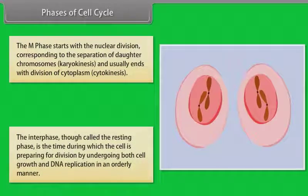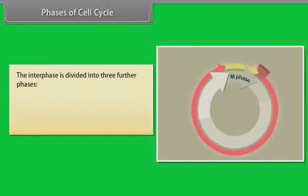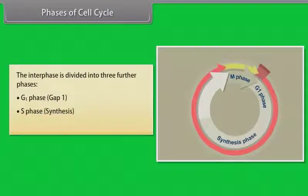The interphase, though called the resting phase, is the time during which the cell is preparing for division by undergoing both cell growth and DNA replication in an orderly manner. The interphase is divided into three further phases: G1 phase or gap 1, S phase or synthesis phase, and G2 phase or gap 2.